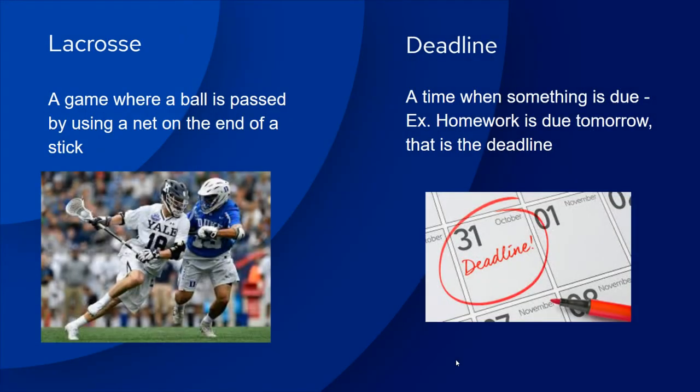Lacrosse is another sport mentioned in this story. It's a game where a ball is passed by using a net on the end of a stick. Here you see two players, and the Yale player in the white — you can really see the lacrosse stick he has and the ball inside it. You toss it using that net at the end, and another player must catch it in their net.